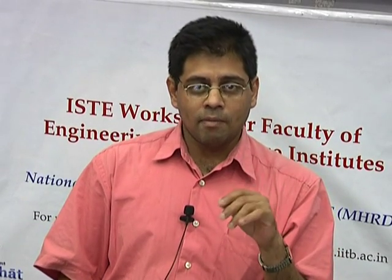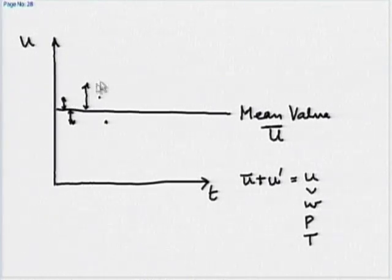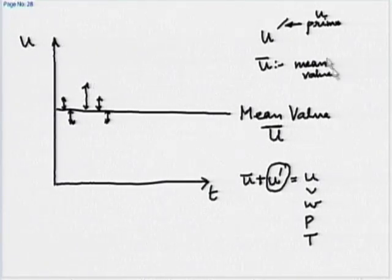For example, the gold price on a given day is say 20,000 rupees per 10 grams. If you track the price every 5 minutes and make a plot, it would be 20,000, 19,950 and so forth. The fluctuation - how much it deviates from the mean - is the fluctuating component, given by the prime notation. This is called U-prime. The summation of the mean and fluctuating quantity is the general definition for any dependent variable U, V, W, P, or T.